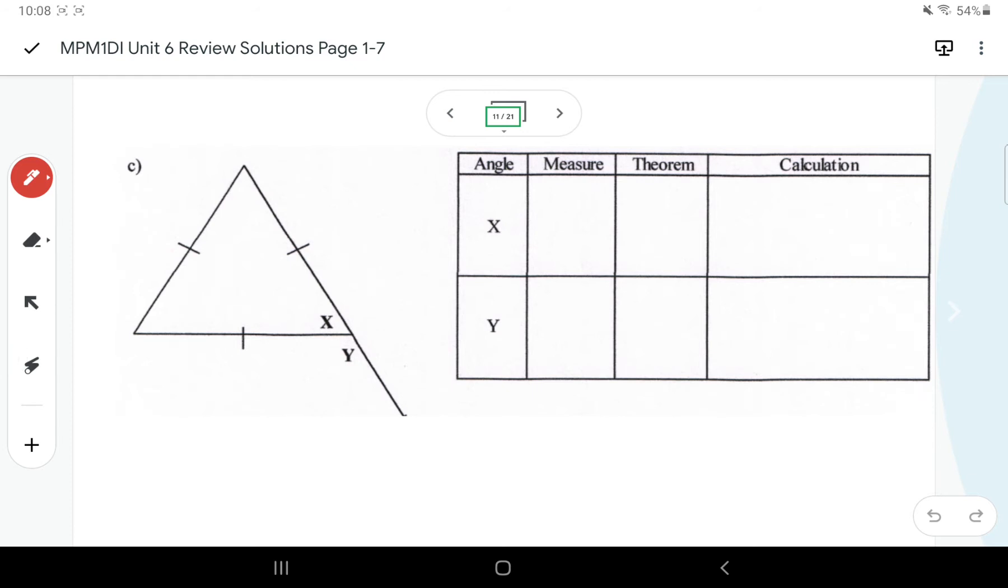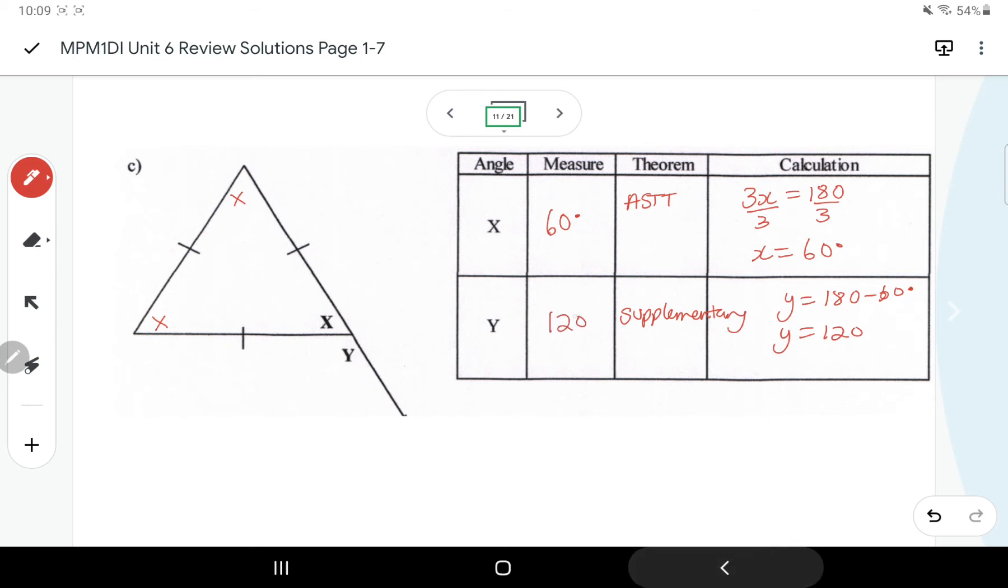Here we know that X, this is an equilateral triangle. We didn't really talk about this too much, but we know that all three angles would be the same, so 3X would be 180. An equilateral triangle always has all three angles as 60 degrees. And Y, I see, is supplementary with the X, so I'd say Y is 180 minus X, which is 120. So I do 180 minus that 60 degrees, you should have 120 for Y.